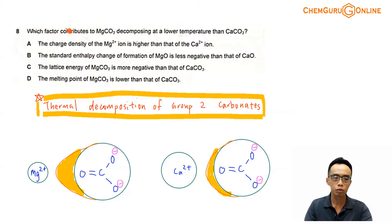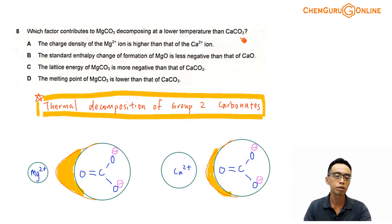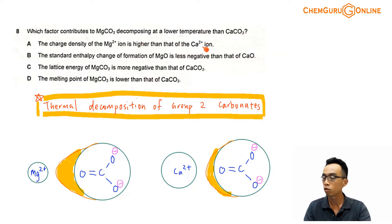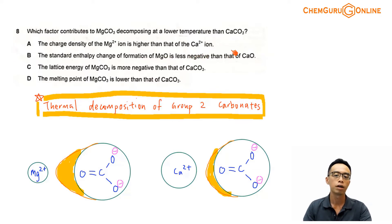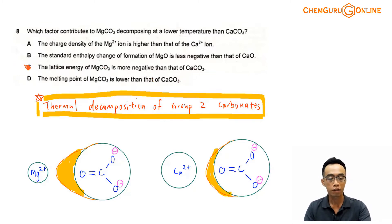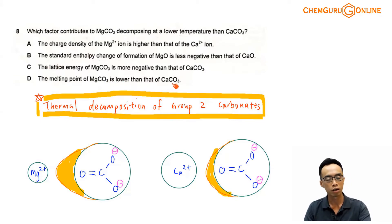Question 8 goes something like this: which factor contributes to magnesium carbonate decomposing at a lower temperature than calcium carbonate? Option A: the charge density of Mg2+ ion is higher than that of Ca2+ ion. Option B: the standard enthalpy change of formation of MgO is less negative than that of CaO. Option C: the lattice energy for MgCO3 is more negative than CaCO3. And finally, option D: the melting point of MgCO3 is lower than that of CaCO3.